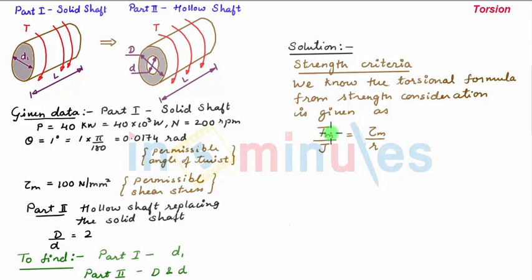So now upon substituting the values of maximum torque and τm and writing the formula for J, we have Tm is 1.909×10⁶ upon J is π/32 × d₁⁴, this is equal to maximum shear stress is 100 N/mm² upon r is d₁/2. So the only unknown is d₁, so upon solving we get the value of d₁ as 46 mm.